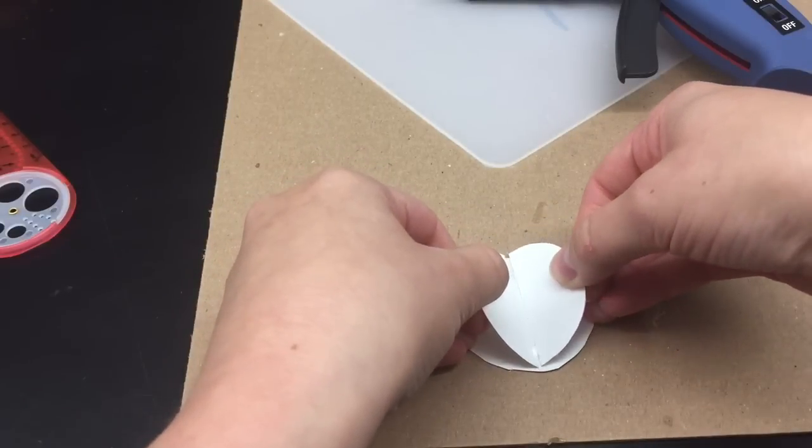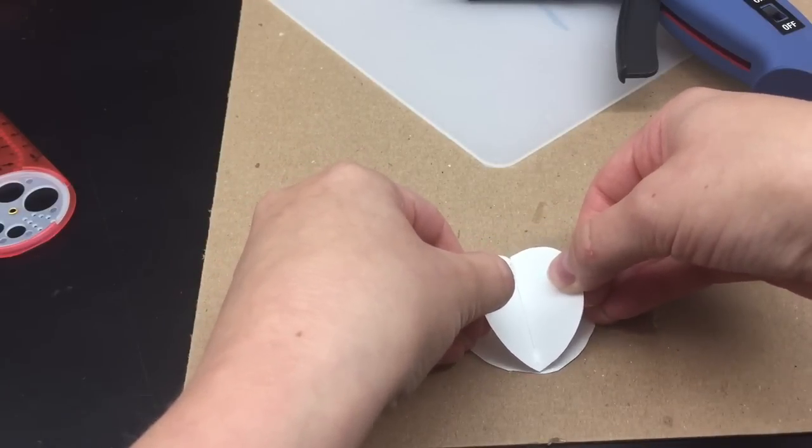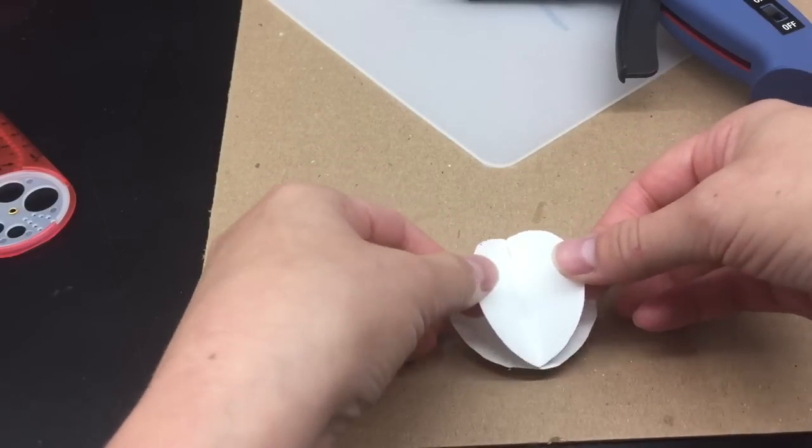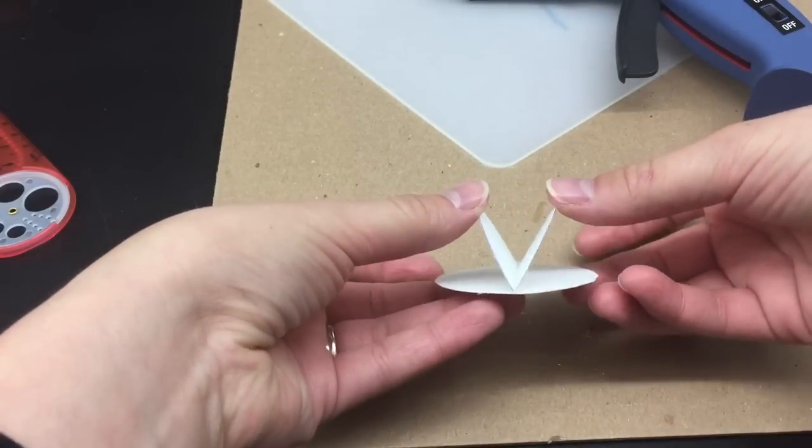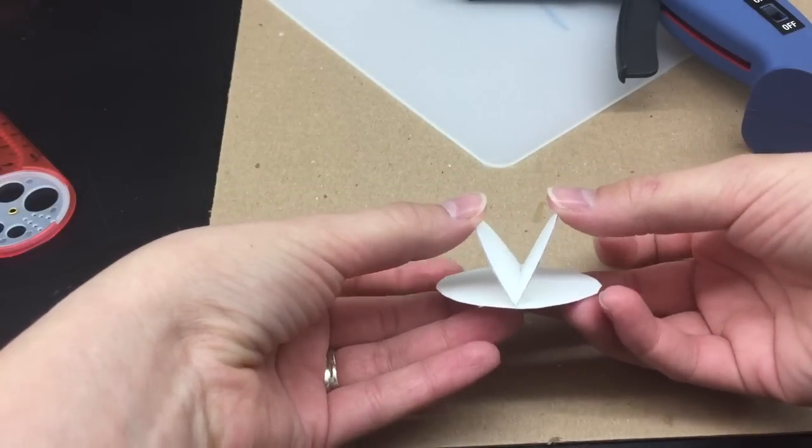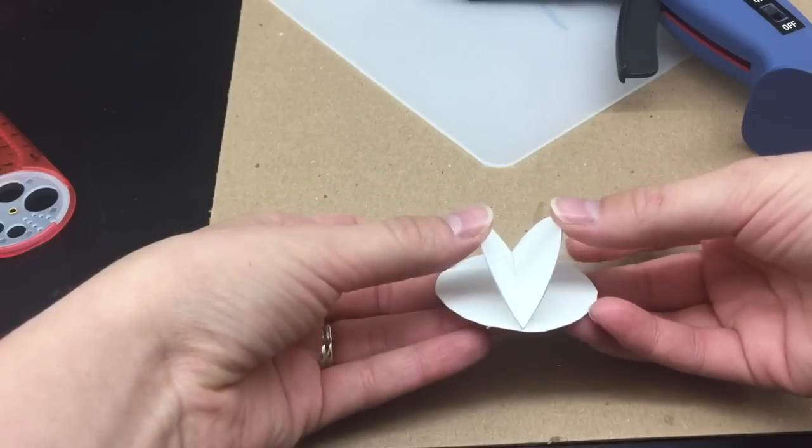Then here comes the tricky part. I have two dots of hot glue. I'm going to take both of my pieces of paper and wiggle them into that hot glue so that it kind of gets in on both sides, all sides.